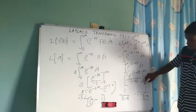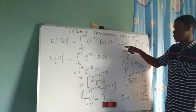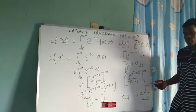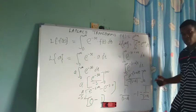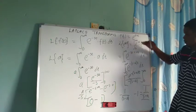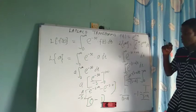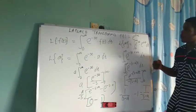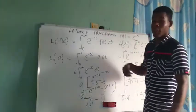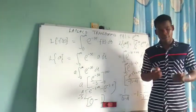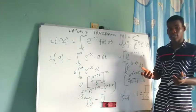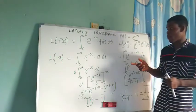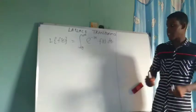So for any constant A, the Laplace transform of e^(AT) gives us 1/(S−A). A can be 2, giving 1/(S−2); A can be 3, giving 1/(S−3), and so on. Take note that this is always a function of S. You can go ahead and solve for different examples — for example, the Laplace transform of sin(T) or cosine of T, and so on.